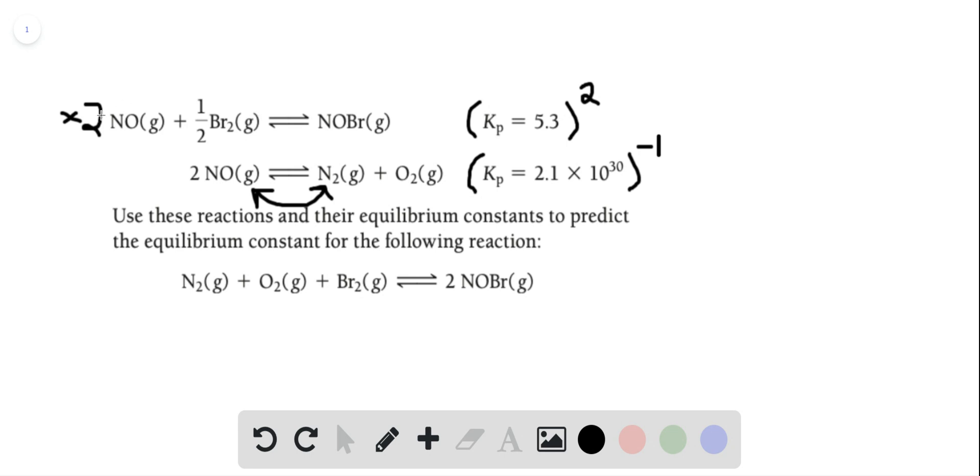So one more time: if we're doubling this, you square the equilibrium constant. If you flip the equation, you invert the equilibrium constant. If you triple this, it would be raised to the third power, and so on. That's what we're going to do to fix these.